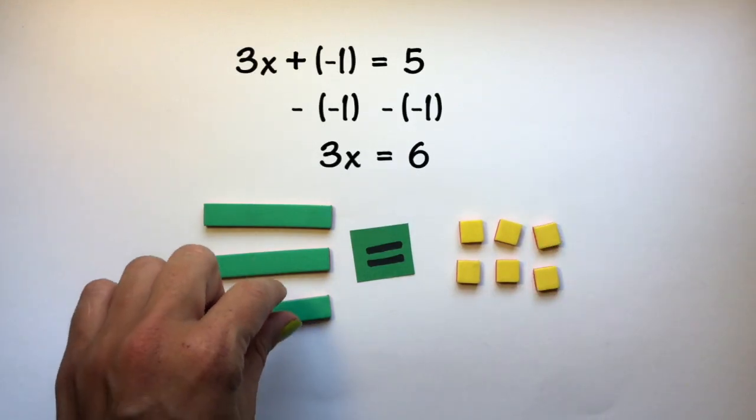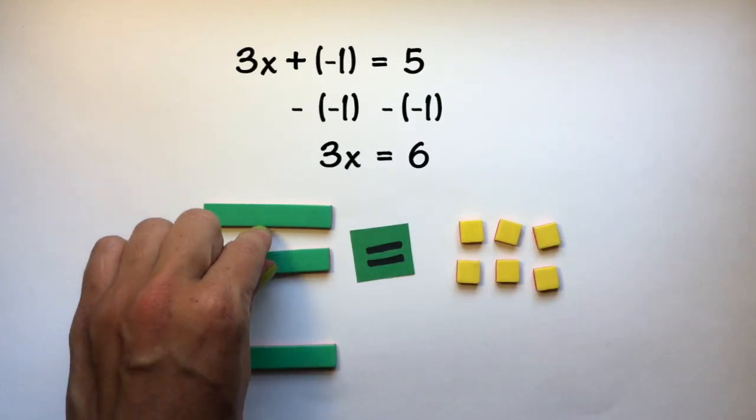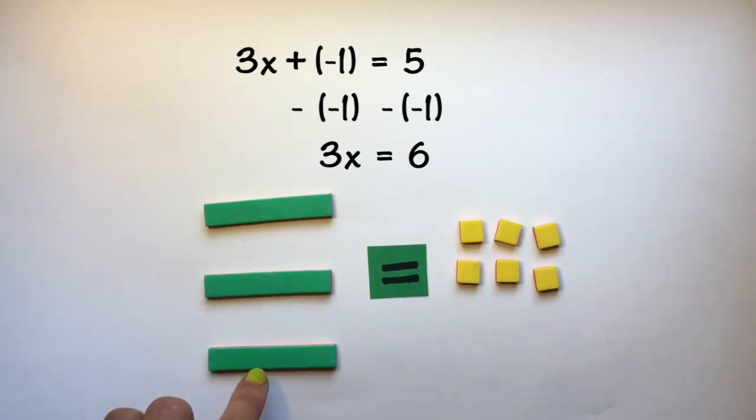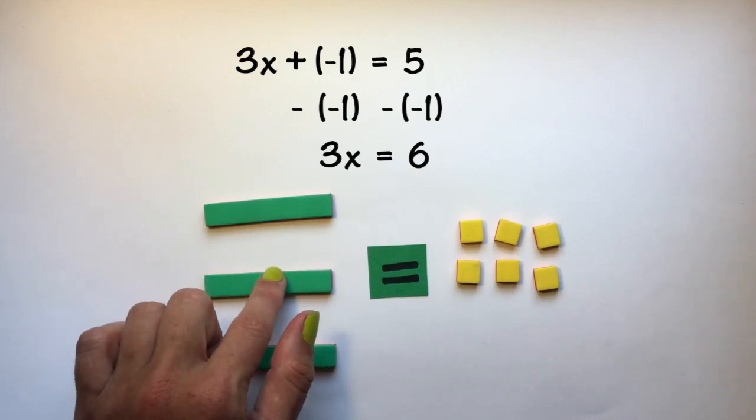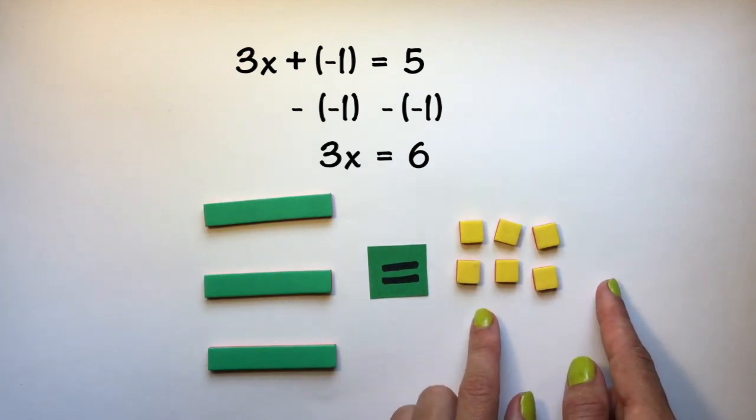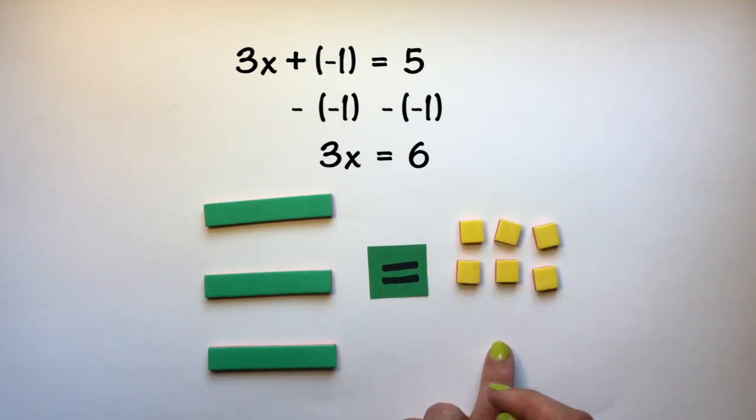So to get 1x by itself I need to split my variables into 3 equal groups. One group of x, one group of x, one group of x. And I need to also split my other side up into 3 equal groups.